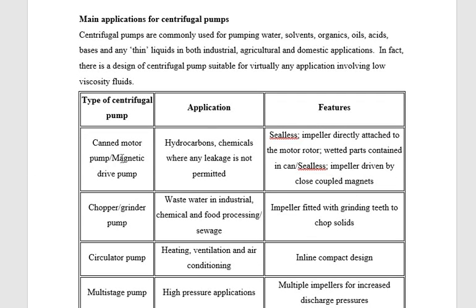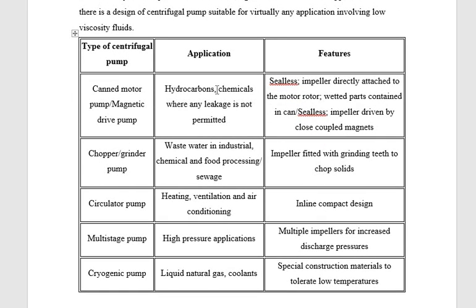Centrifugal pumps have many practical applications. For example, in the Rankine cycle, the feed pump — which is mostly a centrifugal pump — is connected from the condenser to the boiler, taking water from the condenser to the boiler.